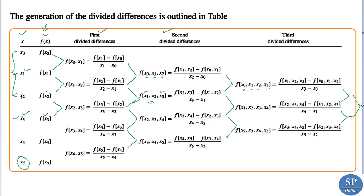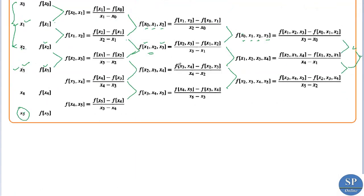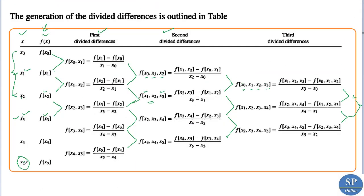This process continues, finding fourth and fifth divided differences. Since n = 5, the last divided difference is the fifth divided difference f[x0, x1, x2, x3, x4, x5], which is the nth divided difference ending the table.